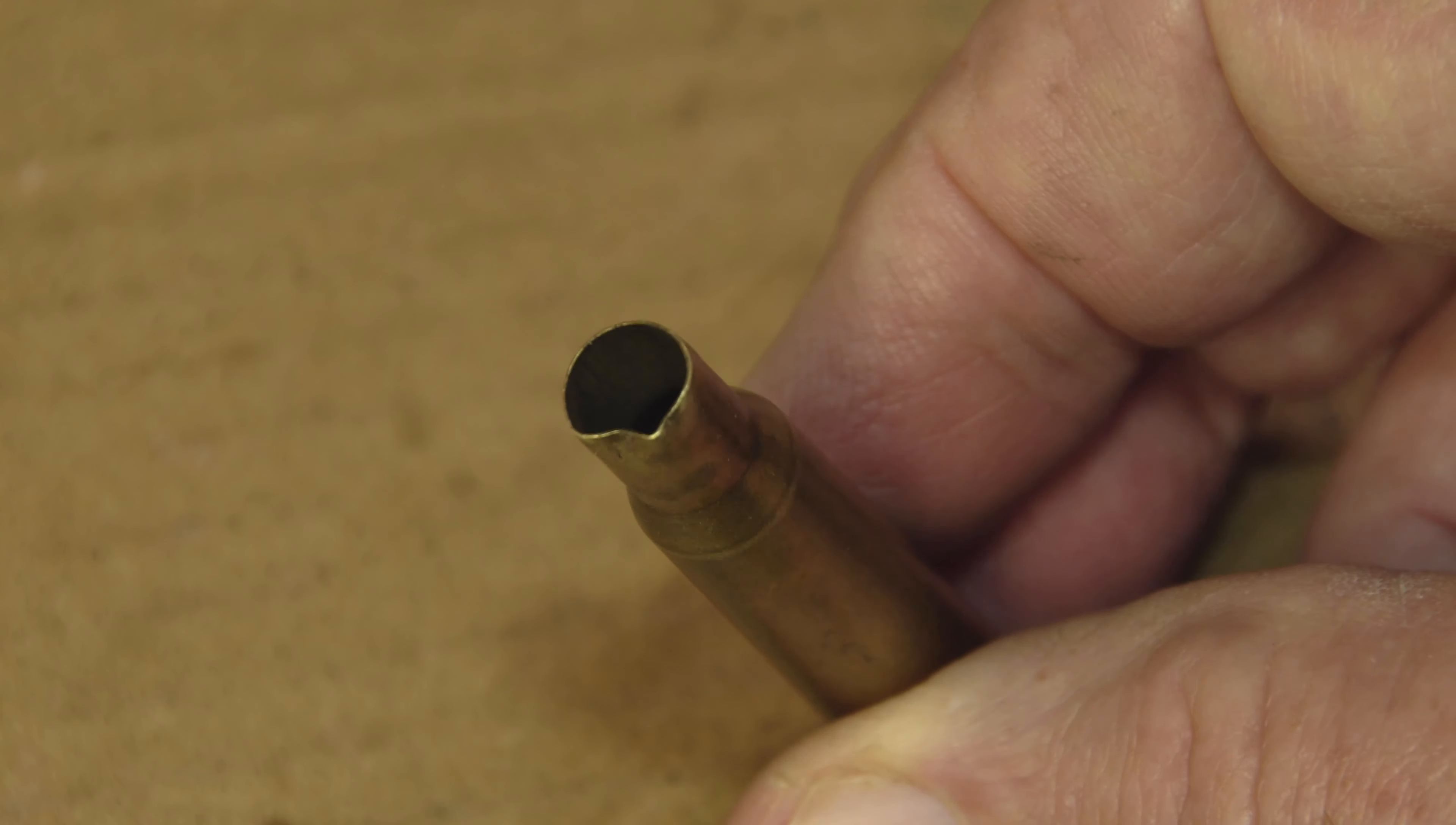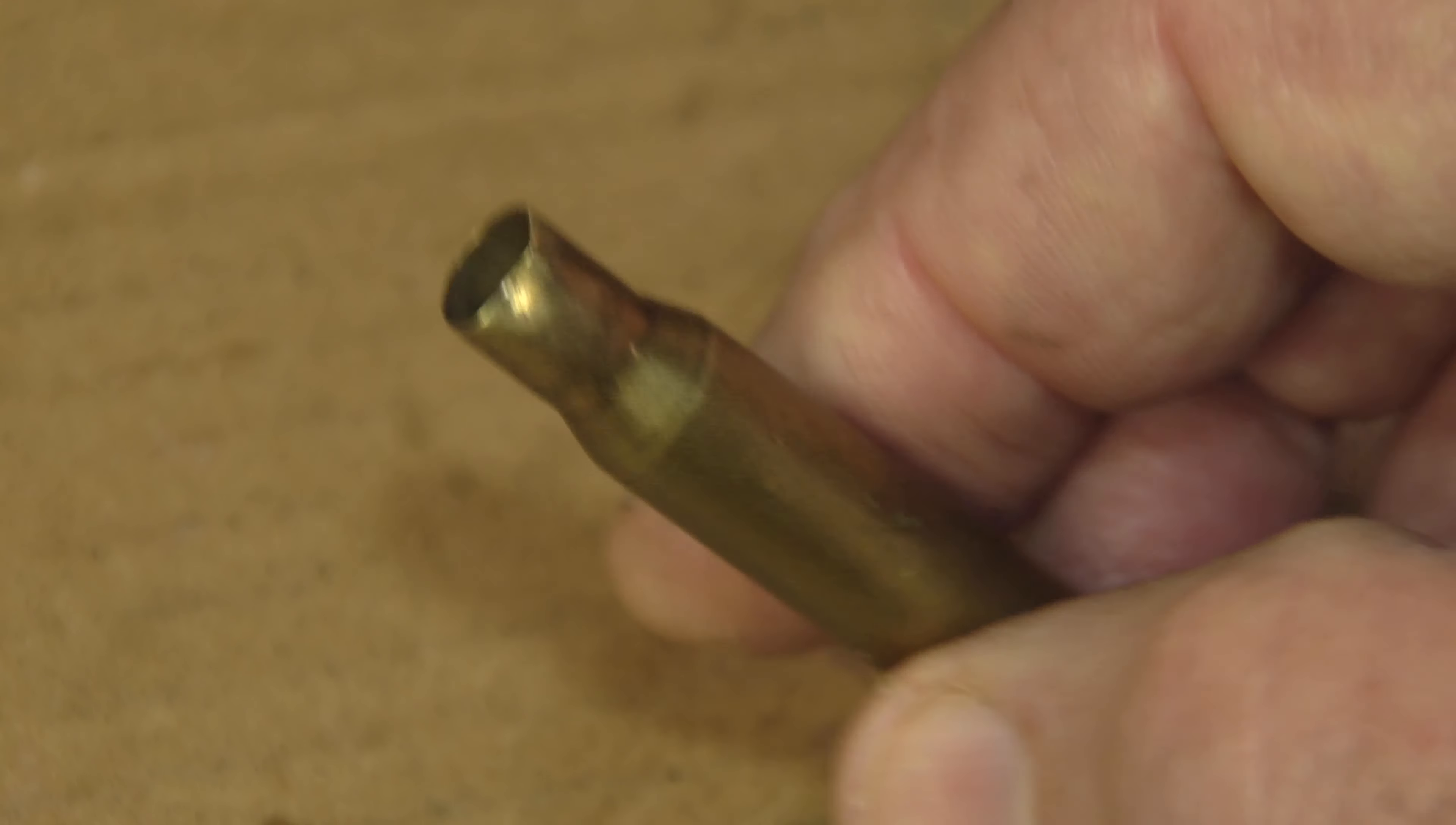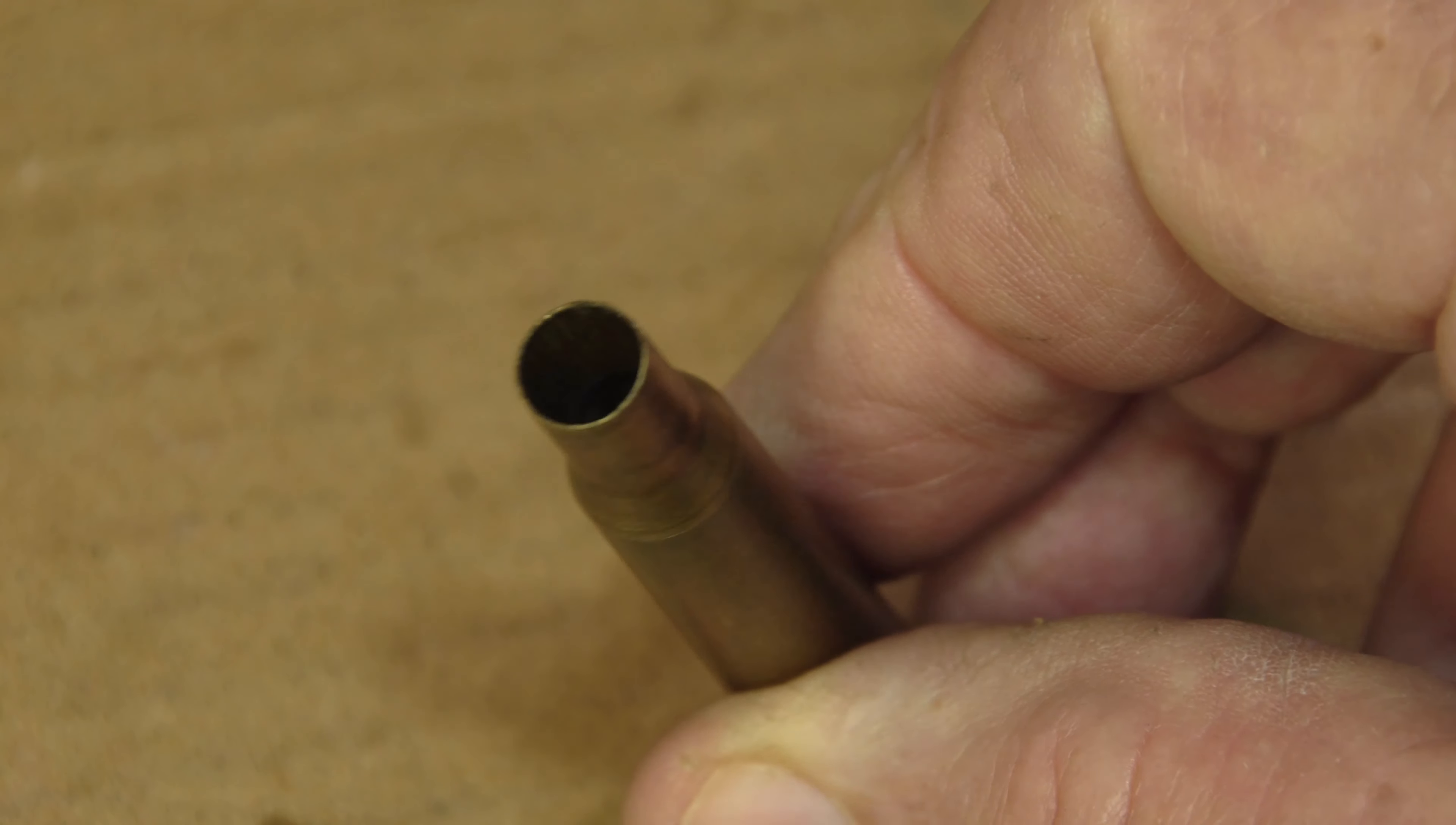If a case neck is mildly bent, the sizing die, which is the number one die, will reshape the neck to specs.